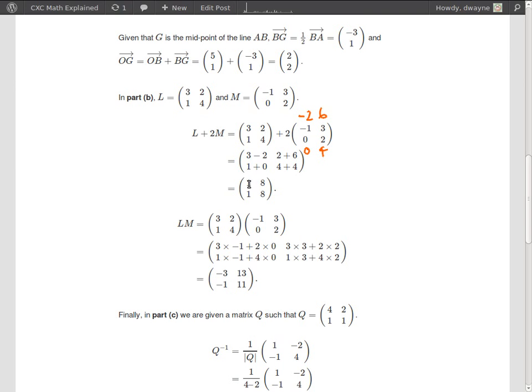3 minus 2 is 1, 2 plus 6 is 8, 1 plus 0 is 1 and 4 plus 4 is 8. Alright, so as you see to add two matrices we add the corresponding entries. Now we want to do the multiplication.